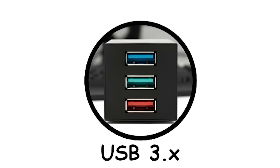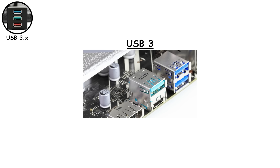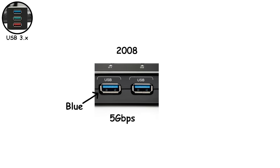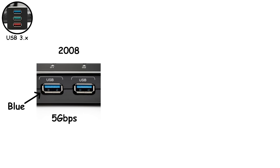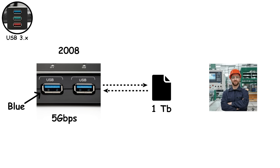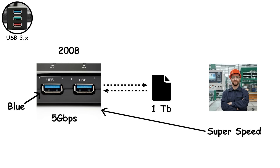USB 3.0 is where things got noticeably faster, and noticeably more confusing. At first, everything was straightforward: USB 3.0 came out in 2008 with 5 gigabits per second speeds and those familiar blue ports. This was the upgrade that finally made transferring big files not feel like a punishment. Manufacturers even labeled it SuperSpeed, and for once the name actually made sense.